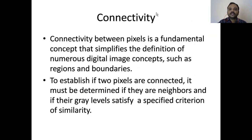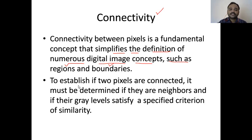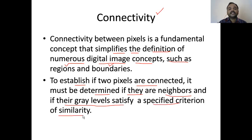Next we will go for connectivity. Connectivity between pixels is a fundamental concept that simplifies the definition of numerous digital image concepts such as regions and boundaries. To establish if two pixels are connected, it must be determined if they are neighbors, and if their gray levels satisfy a specified criterion of similarity. These are the conditions for two pixels to be connected.